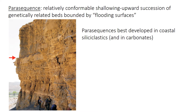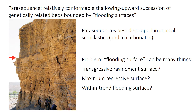The red arrow here points to one of these flooding surfaces. It's very recognizable — a very abrupt change typically from shallow water sandstones back to more offshore shales or other fine-grained units. However, these flooding surfaces, although very recognizable, have somewhat ambiguous interpretations sometimes. It just requires that there's sort of rapid deepening of the facies, but that could be from several different things. For example, this could be a transgressive ravinement surface, or maybe it's just a maximum regressive surface if there's very little deposition during the early stages of transgression, or maybe even a within-trend surface where the transgression actually starts earlier in the underlying sandstones.